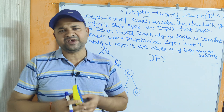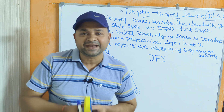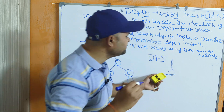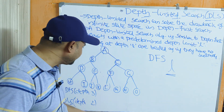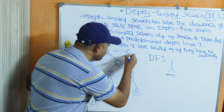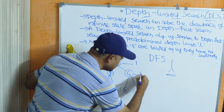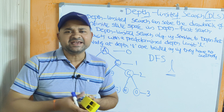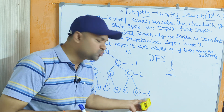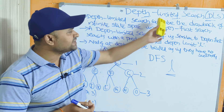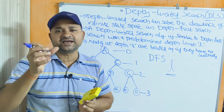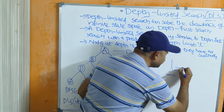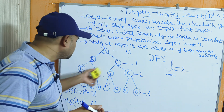Depth Limited Search is similar to DFS but with a predetermined depth limit. In this tree, level 0 is the root, then level 1, level 2, and level 3 — so the depth of this tree is 3. With DFS we search up to the deepest level, which is 3. But with DLS we set a predetermined depth limit, for example 2, and search only up to that level.